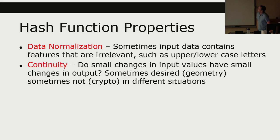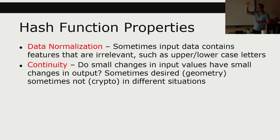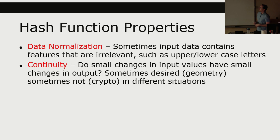Continuity: do small changes in input values produce small changes in output? Sometimes we'd want that — for example, hashing an XY location where nearby cells should produce nearby hash values so data can be stored contiguously in memory. Other times, especially in cryptography or security, we don't want that at all. If I had a password that was 1,000 characters long and changed just one character, I'd want the output to be completely different, so attackers couldn't gather typo hashes and compare them to potentially reverse engineer my password.